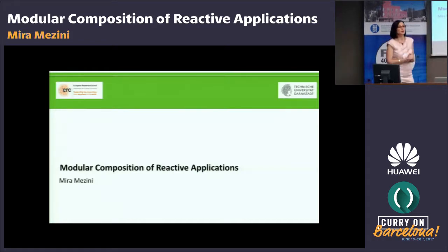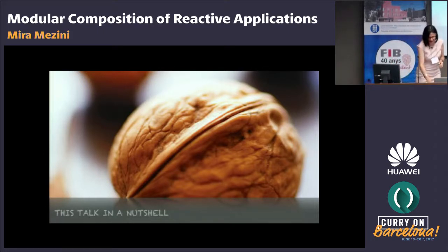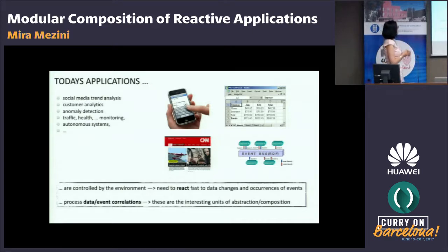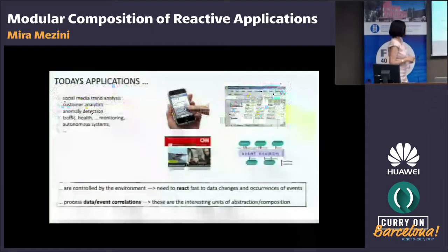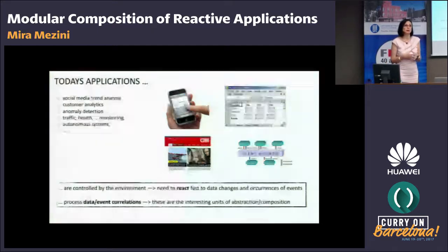Today my talk is about our work on programming language design. I will start with a very brief summary of the talk so that you can decide whether you want to stay to the end or not. Today's applications — and I see a list of some examples of what I consider typical applications we build today — are controlled by the environment rather than controlling the environment, which means they need to react fast to data changes and occurrences of events. The other property is that they are mostly about correlating data and events.